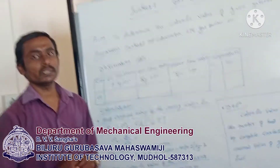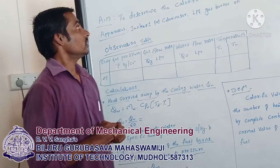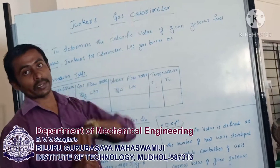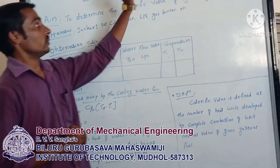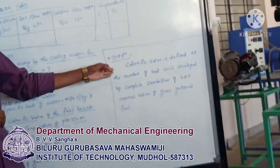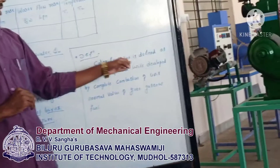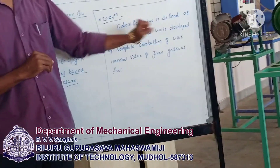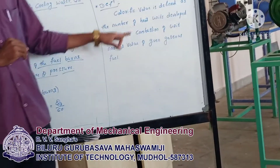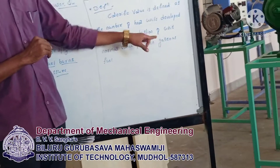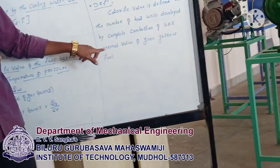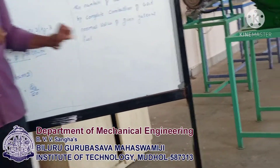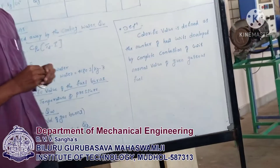In Energy Conversion Lab, which is the Pate Experiment — Junkers Gas Calorimeter. What is the calorific value? The calorific value is defined as the number of heat units developed by complete combustion of unit volume of the given gaseous fuels. This is the definition of calorific value.